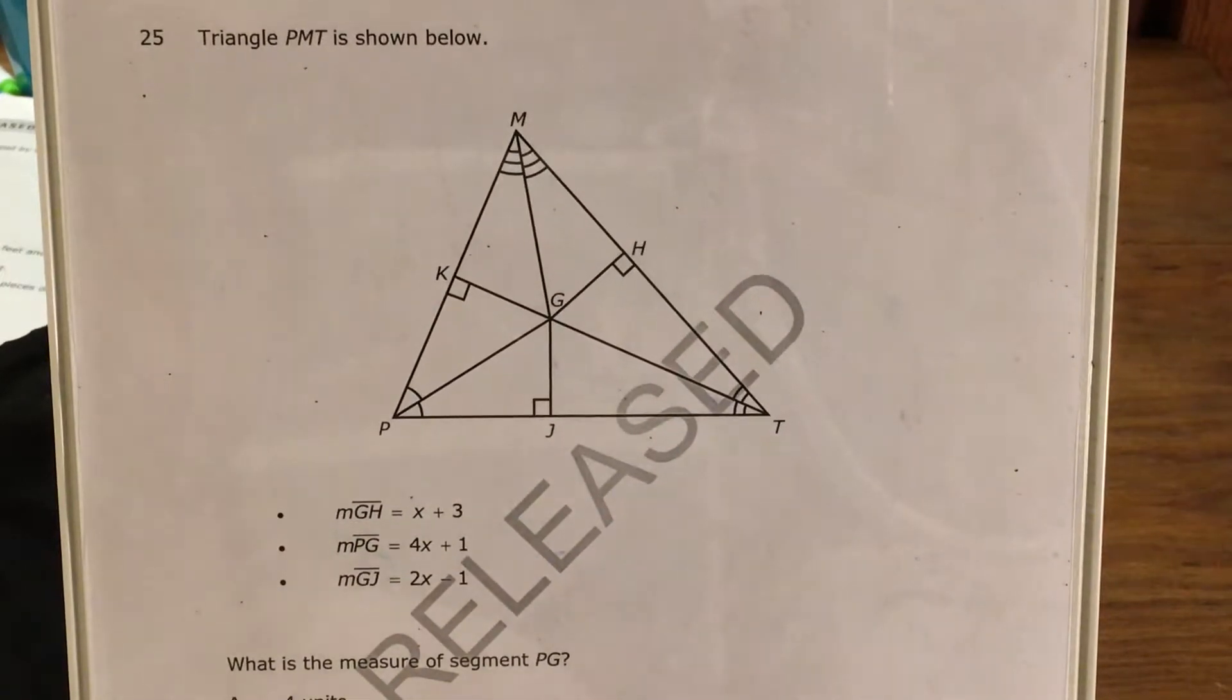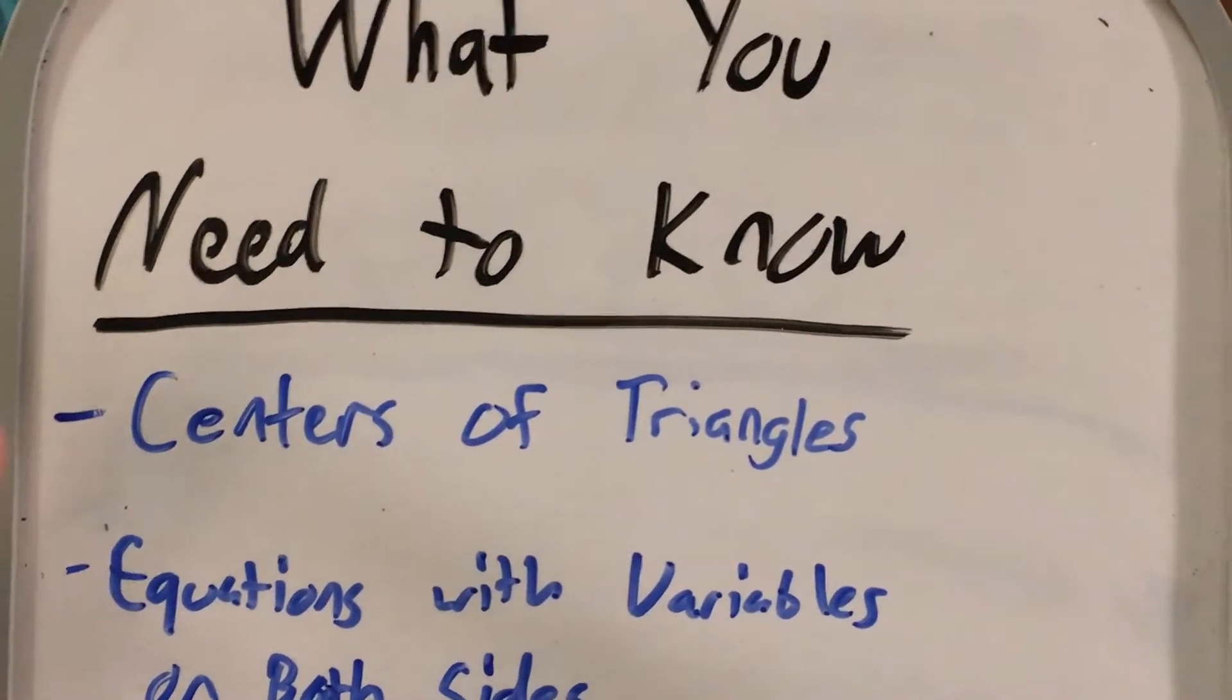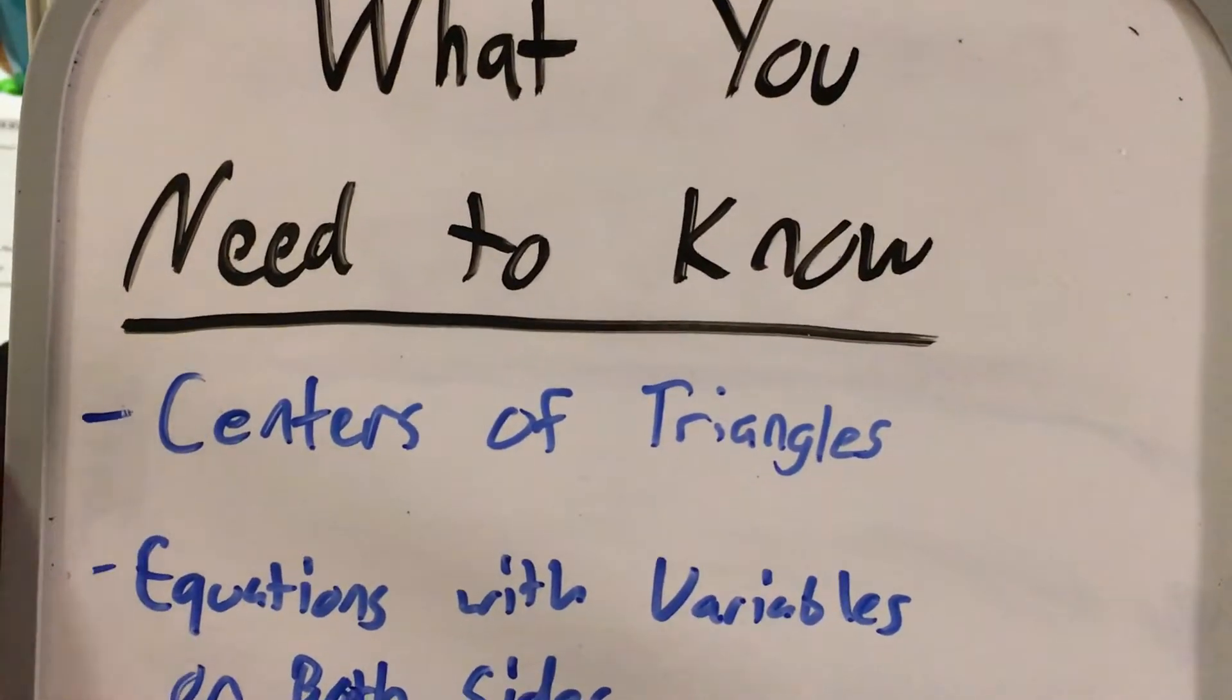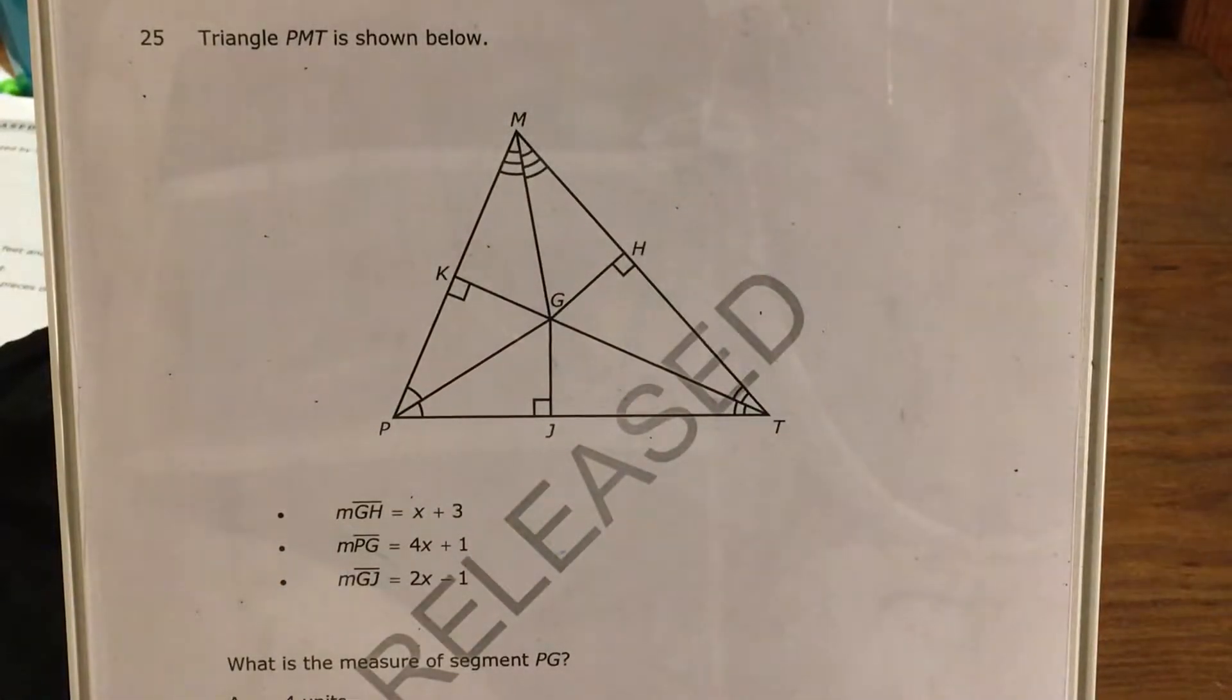Alright, so I want to start with the what you need to know section. We need to know about centers of triangles and the different kinds of centers of a triangle that we can see. We'll also need to solve an equation with variables on both sides.